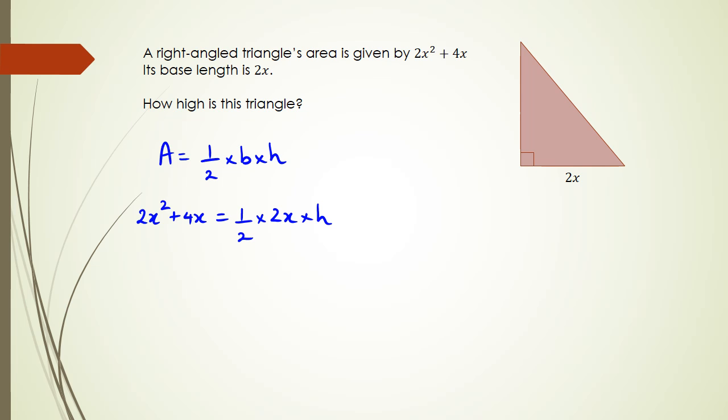The first method I'm going to choose is I'm going to do 2x² + 4x. Now half times 2x can be written as x multiplied by h. So the next part is I need to actually rearrange so that h is by itself, so I'm going to divide both sides by x.